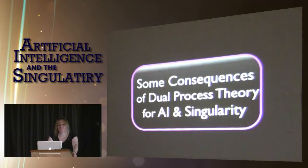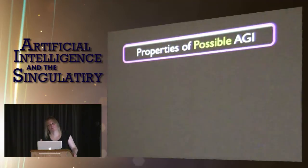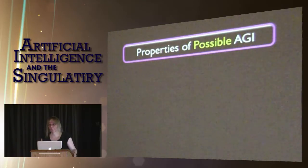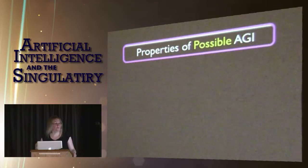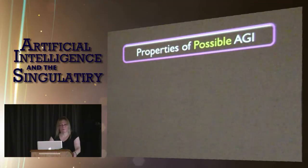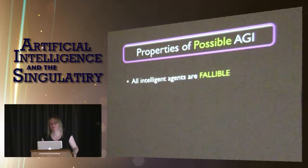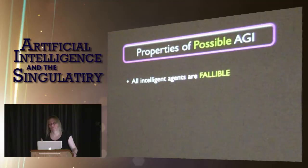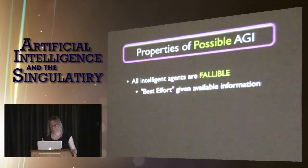Some consequences of dual process theory for AI and the singularity. Let's look at properties of a possible AGI as opposed to an impossible one. All the reductionist model-based ones are never going to make it to AGI — they postulate an impossible kind of AGI. The fictional AGI you see on television — Skynet and so on — are all impossible. First property: all intelligent agents are fallible without exception. This follows directly from the frame problem — the world changes behind your back. Best effort given available information is the best thing we can ever do. All intelligence is also limited, and unlimited intelligence would be infallible.